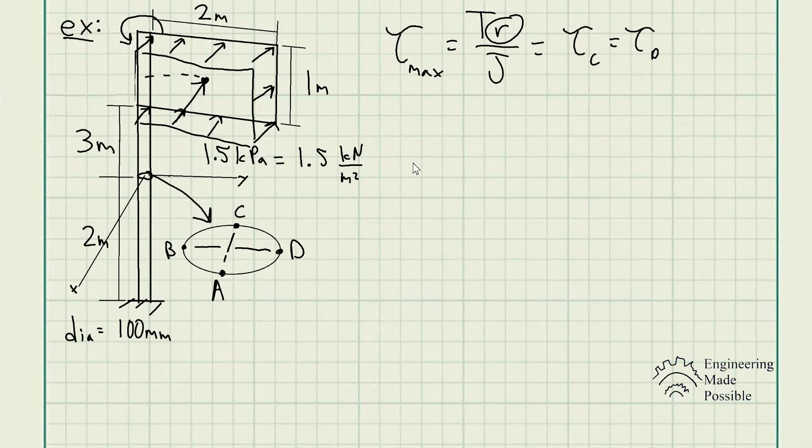For this problem statement, the sign is subjected to uniform wind loading as shown. Determine the stress components at point C and D on the 100 millimeter diameter supporting post. In this instance, as you can see, we have the given dimensions.